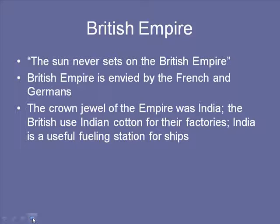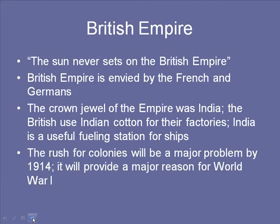The crown jewel of the British Empire was India. The British used Indian cotton for their factories, and India was a useful fueling station for ships. India was really the center of the British Empire until 1948, when a peace movement led by Gandhi helped to essentially force the British to retreat and leave India to its independence.